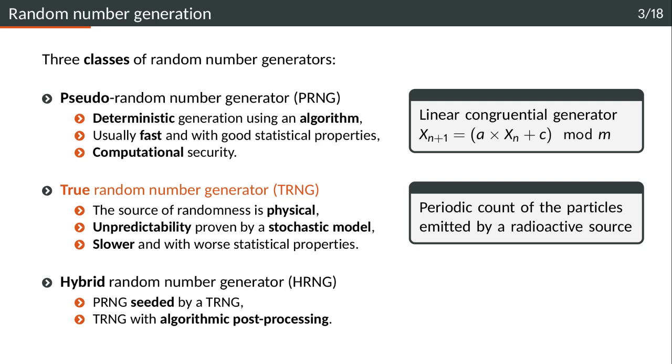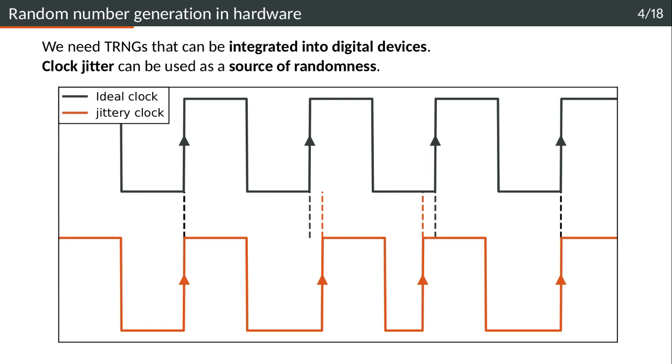In order to get the advantages of both, we can also find hybrid random number generators, such as a PRNG being seeded by a TRNG, or a TRNG with some algorithmic post-processing.